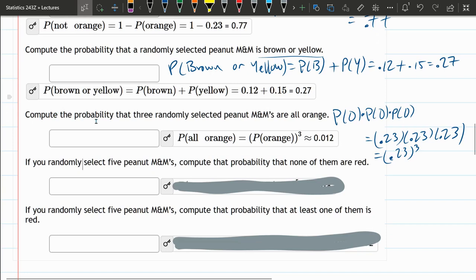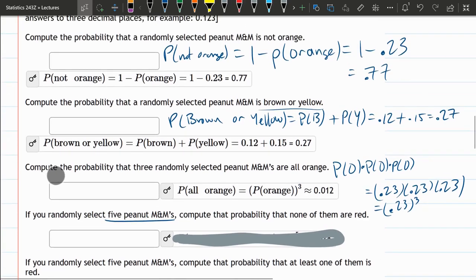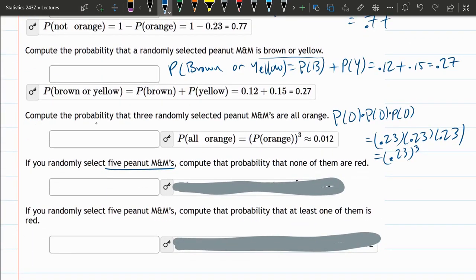If we randomly select five, probability that none of them are red. So you could think about probability that none of them are red. The best way to do this, none are red, is the opposite of one or more are red. So there's a few ways we could do it. Let's just do probability of not red for just one M&M.